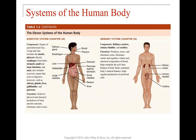The digestive system includes all organs of the gastrointestinal tract — a long tube from mouth to anus — including the mouth, pharynx, esophagus, stomach, small and large intestines, and anus. Accessory organs include the salivary glands, liver, gallbladder, and pancreas. The digestive system breaks down food physically through mastication and churning, and chemically through enzymes. It also absorbs nutrients through the intestines and eliminates undigested material as solid waste.